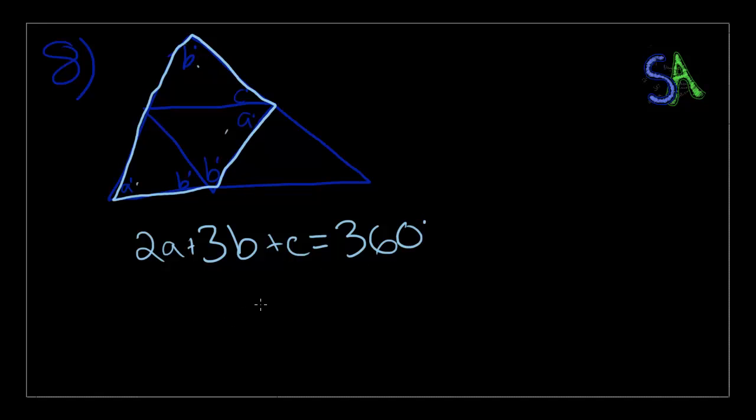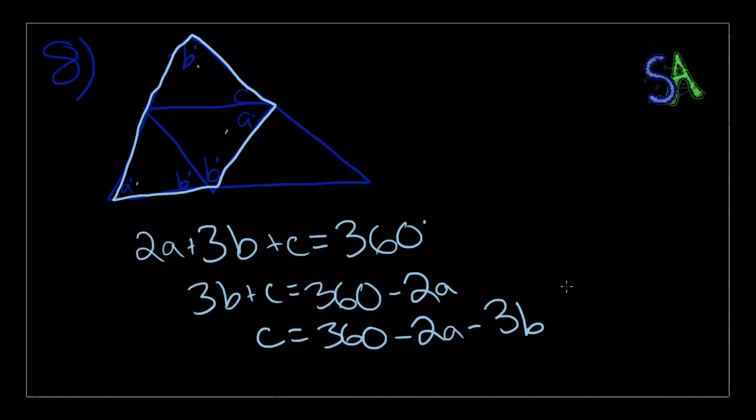Now, if we subtract 2A on both sides, we get 3B plus C is equal to 360 minus 2A. Now, subtract 3B. So, C equals 360 minus 2A minus 3B, and that's our answer. That's choice E.